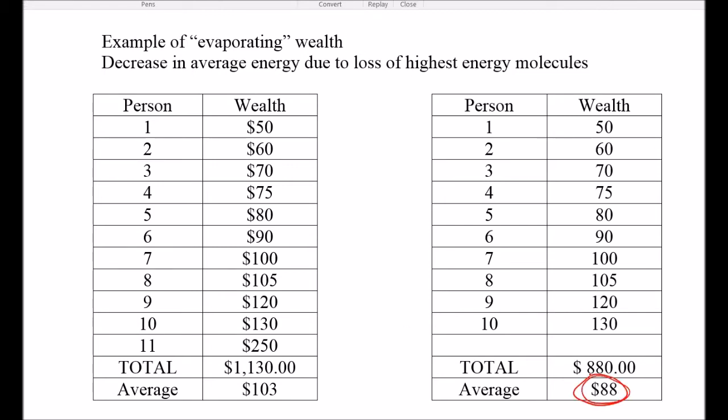This average here, that corresponds to temperature in molecules. So the average wealth would be comparable to average kinetic energy of molecules. That's what temperature measures. So you can see this is cooler. Due to loss of this highest energy individual, which would be the highest energy molecules, the ones that can break their bonds, the ones that can evaporate, leave the system.